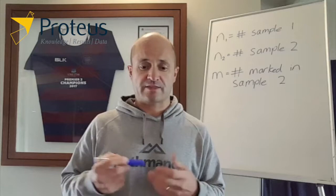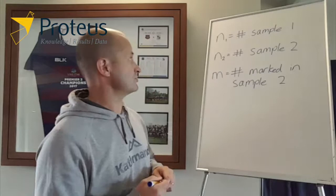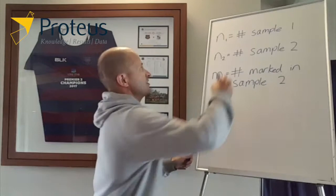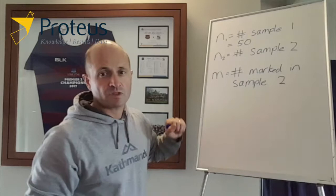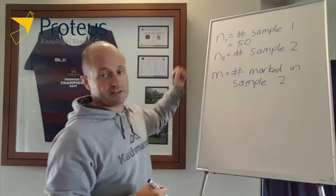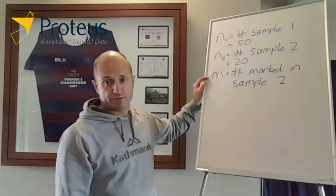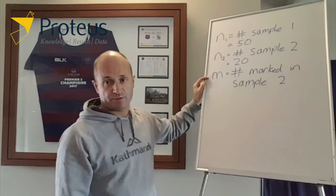So to estimate things using the Lincoln-Peterson estimator, we have a few summary statistics that we need. Firstly, the number of bottle caps in our first sample — that's the number of individuals marked — so in this case that was 50. Then we have the size of our second sample: when we tried to recapture those previously marked individuals, our sample size was 20. And then how many of those individuals captured in the second sample had been previously marked — in this case, seven bottle caps.